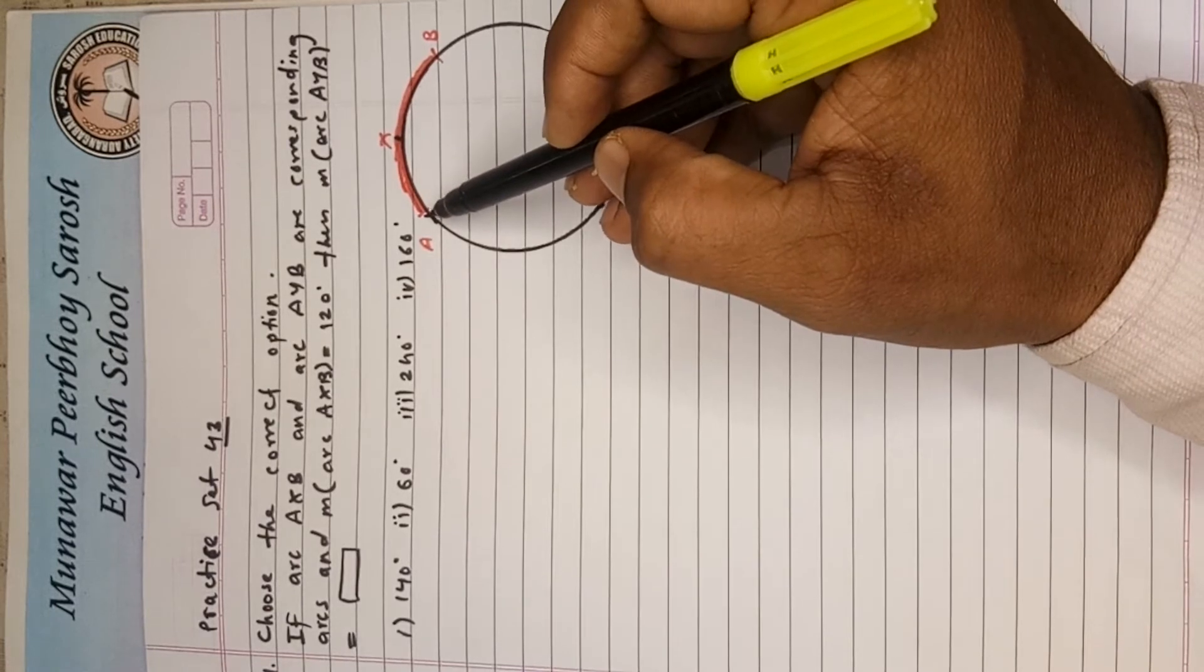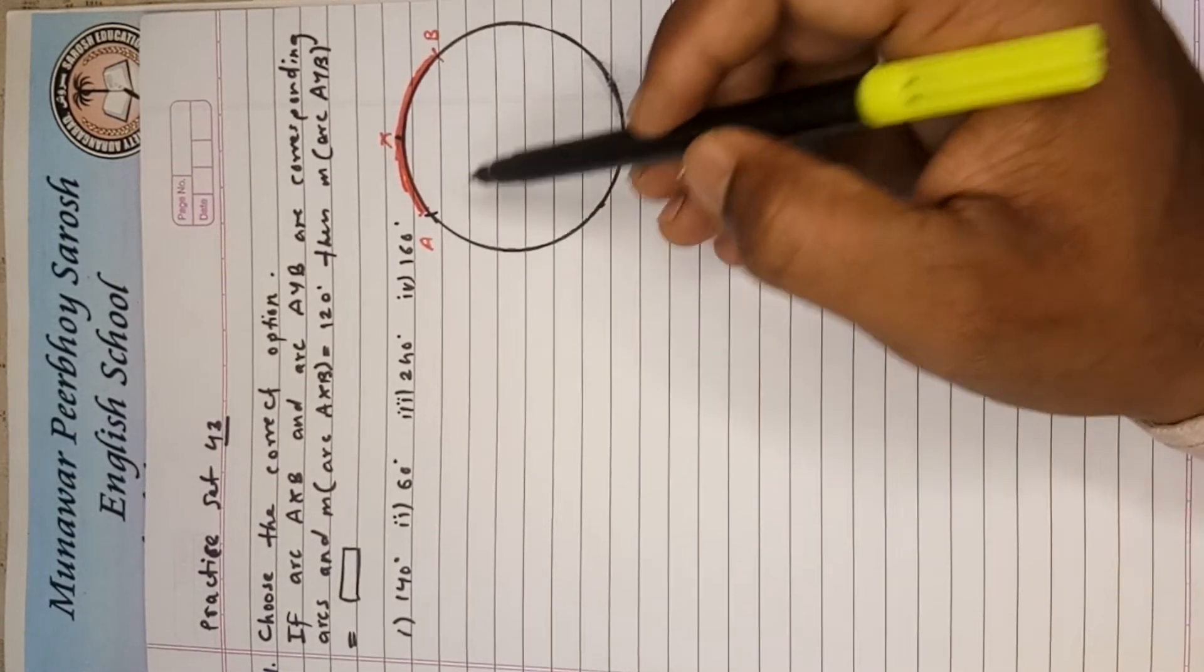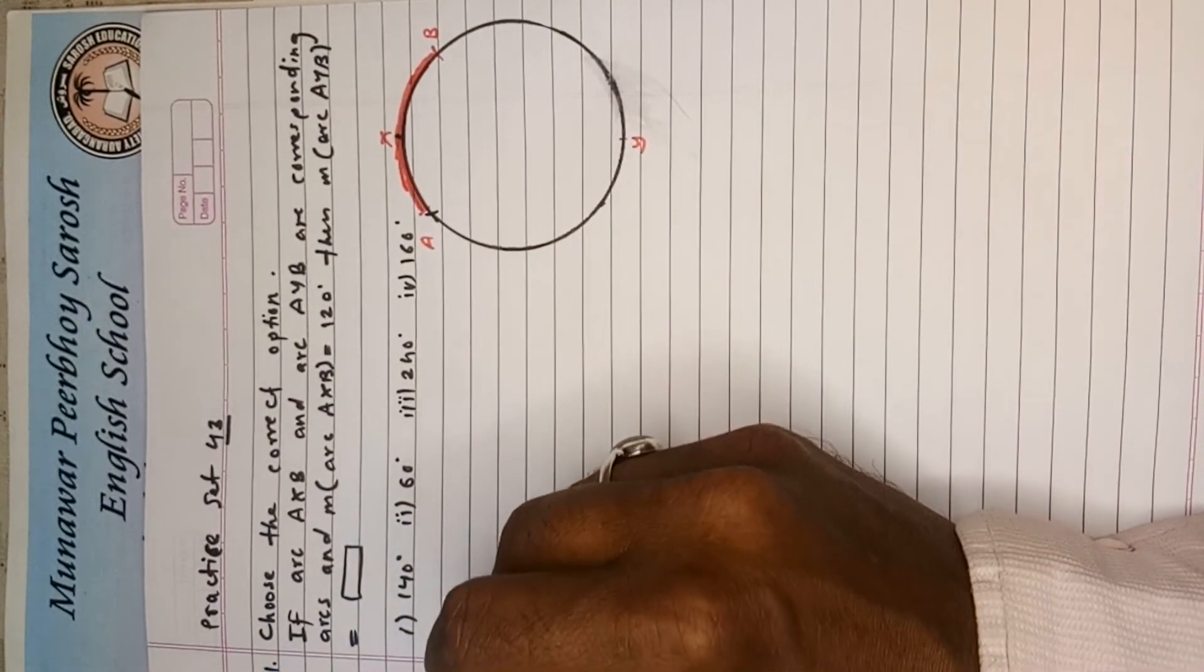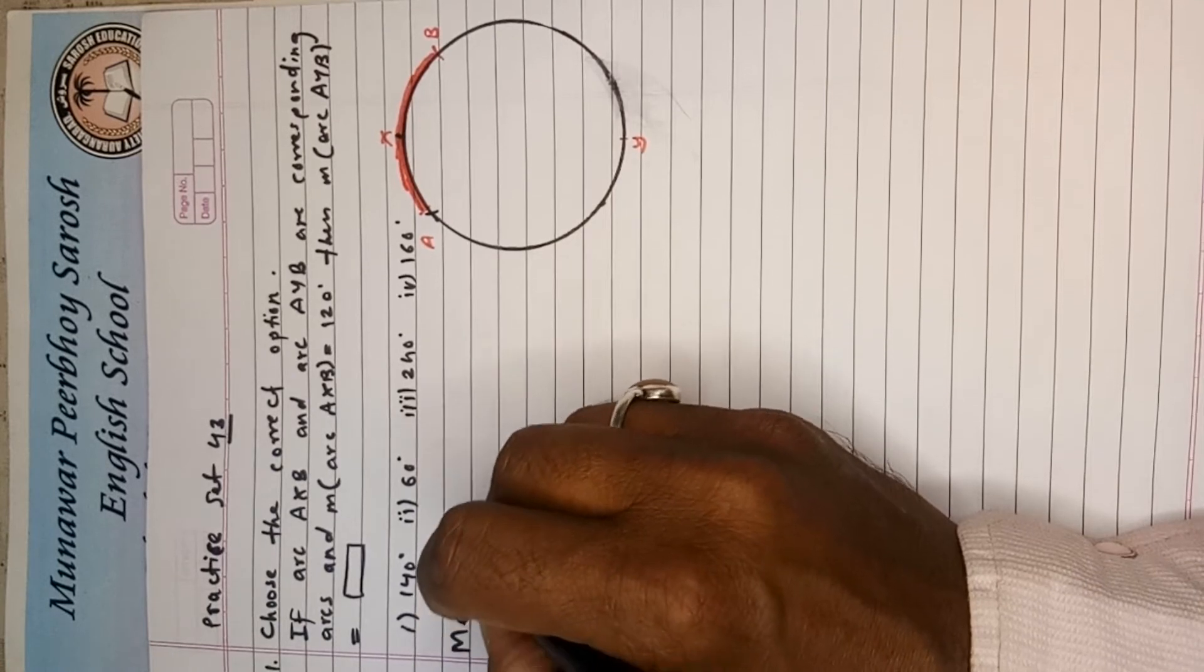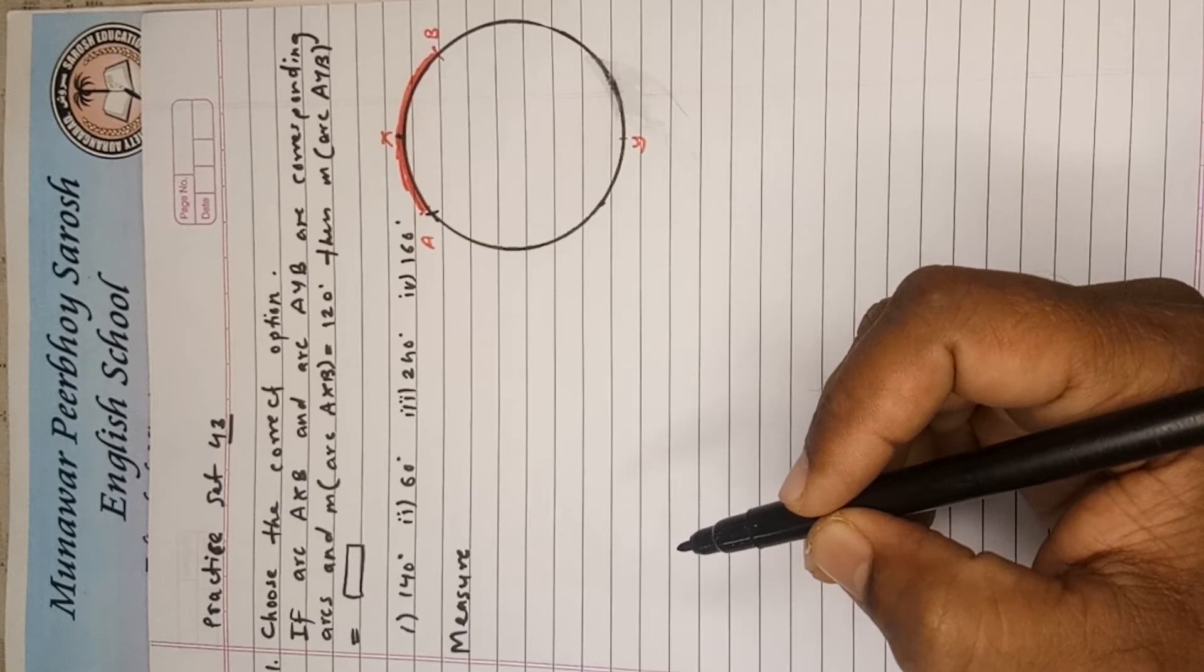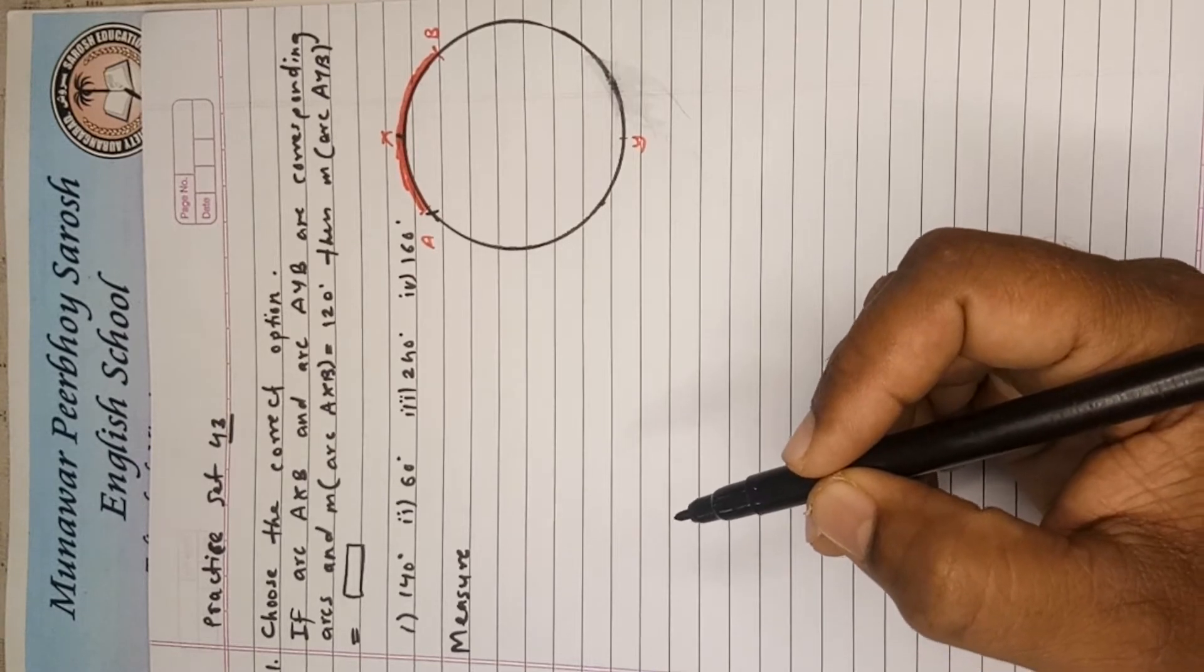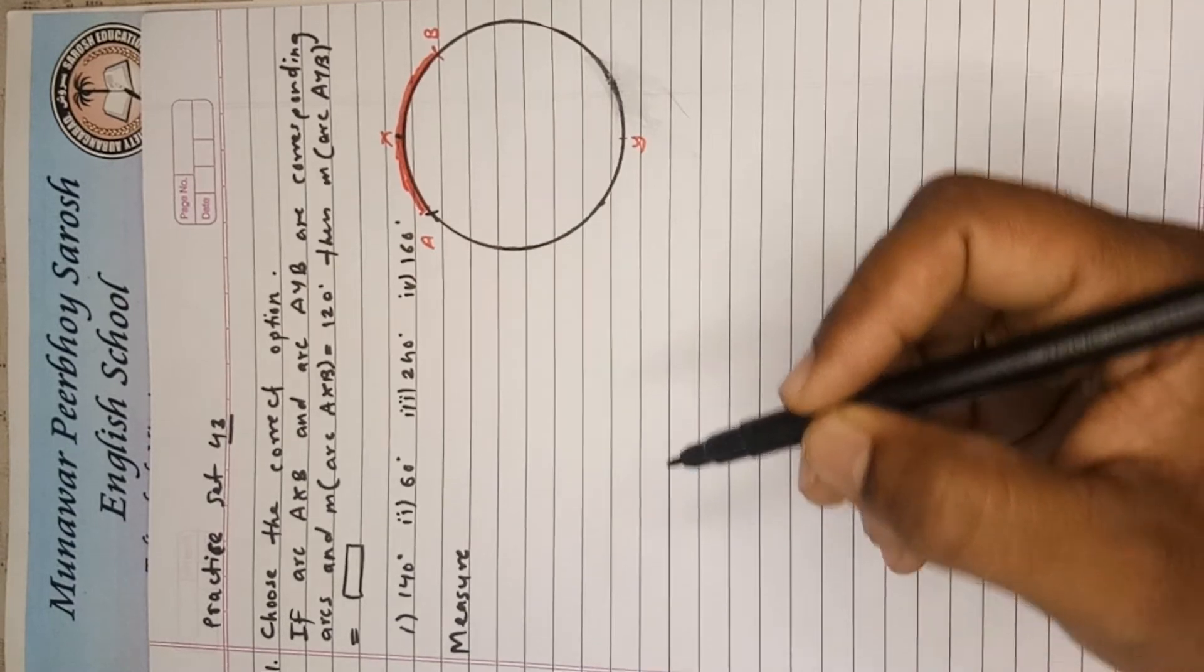So now they have given to us the measure of this arc 120 degree, and they are asking us to find the measure of AYB. Now let's see the solution. First of all write here: M-E-A-S-U-R-E, measure for the measurement, and major, that is the bigger, M-A-J-O-R major.